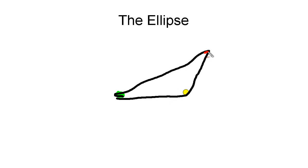Keeping the string taut, go all the way around the two nails, and you'll end up with an ellipse.